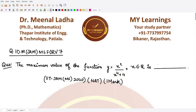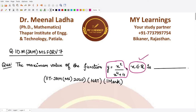Hello everyone, welcome to this video. We are going to solve a question from IIT JAM Mathematical Statistics paper 2020. This is a numerical answer type question and a one-mark question. They are asking for the maximum value of a one-variable function: x squared divided by x to the power 4 plus 4, where x is a real number.